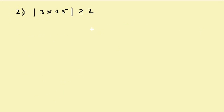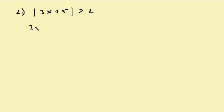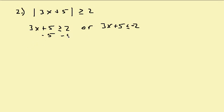Let's look at this one: absolute value of x plus 5 is greater than or equal to 2. For greater than or equal to, we use the second rule. We rewrite it as: what's inside the absolute value is greater than or equal to k, or what's inside the absolute value is less than or equal to negative k. Solving the first part — subtract 5 — gives 3x greater than or equal to negative 3, then divide by 3 to get x greater than or equal to negative 1.